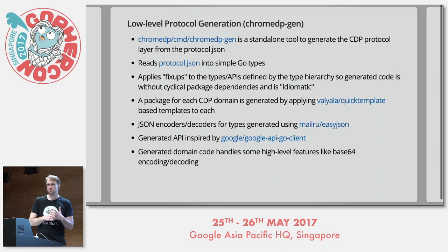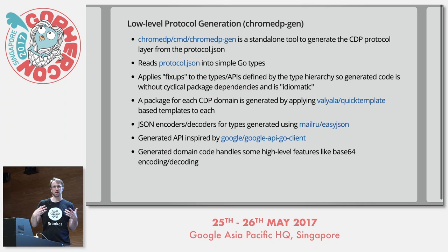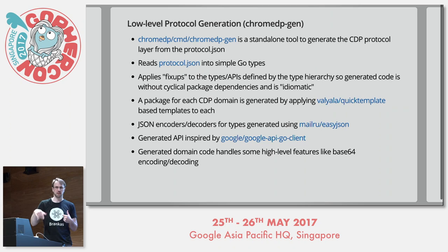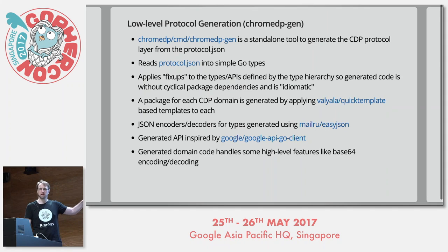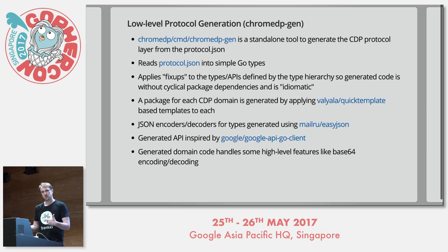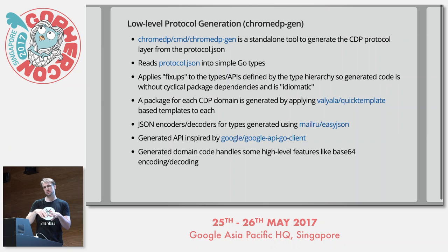There are two major components to ChromeDP. First, we have an automatic tool that generates the low-level protocol code, called chromedp-gen, which is inside the ChromeDP source tree. The way it works is we read the protocol JSON that defines those domains. We apply fix-ups to make the resulting generated code more Go-like and idiomatic — things like fixing typos and spellings. ChromeDP-gen then generates a standalone package for each Chrome domain: the input domain package, the page domain, the DOM domain, and so on.